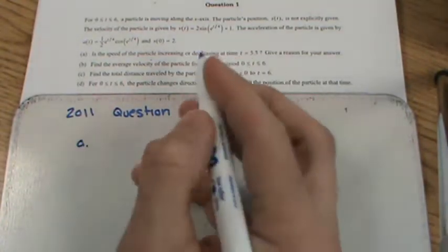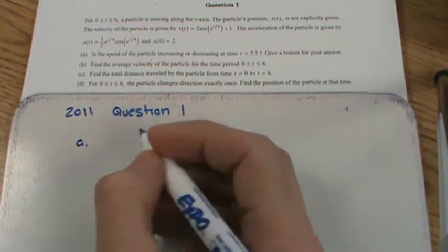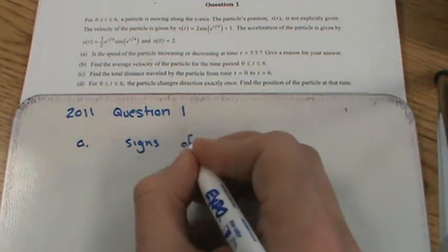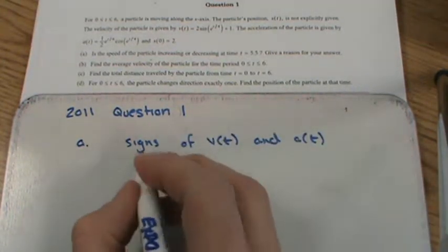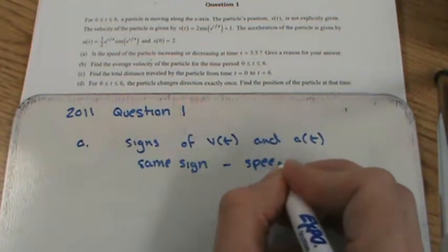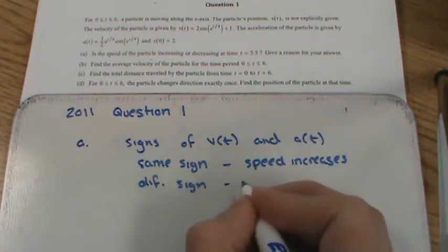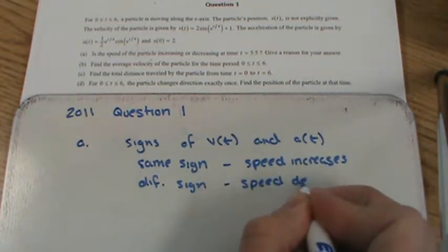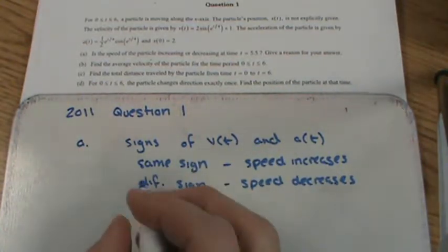Part A asks: is the speed of the particle increasing or decreasing at t = 5.5? Give a reason for your answer. The key concept here is that when looking at speed, we examine the signs of velocity and acceleration. When they have the same sign, speed increases; when they have different signs, speed decreases. So we need to find v(5.5) and a(5.5).